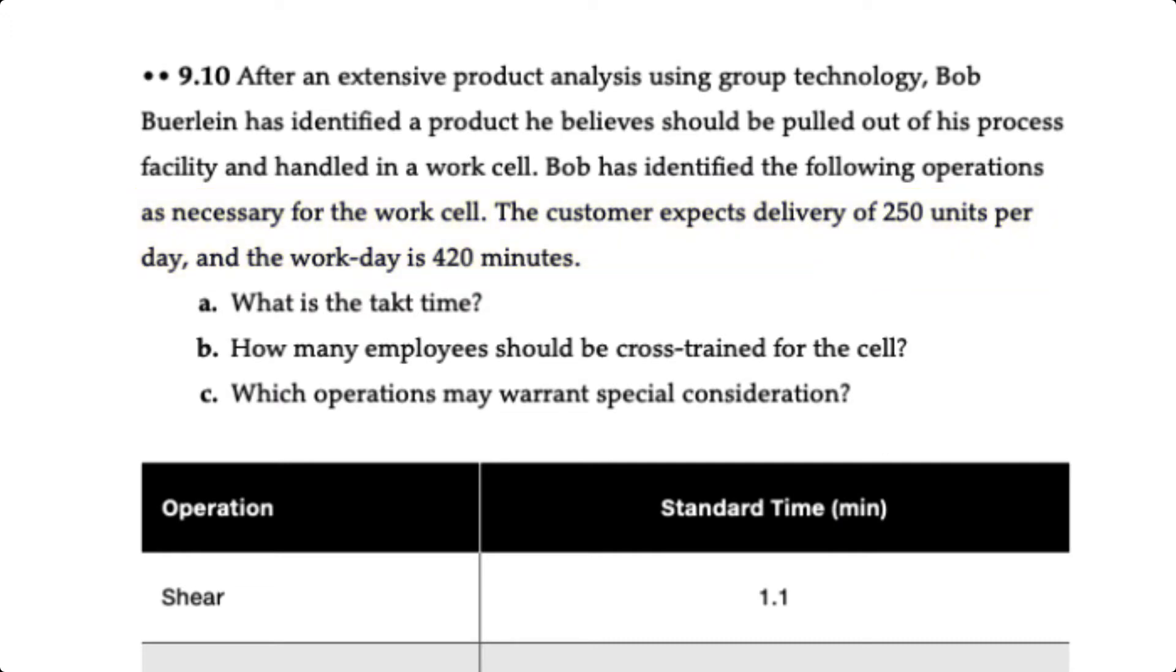This question has three requirements. The first is to determine the takt time. The second to determine how many employees should be cross-trained for the cell, which is essentially the number of workers required. And third, which operations may warrant special consideration.